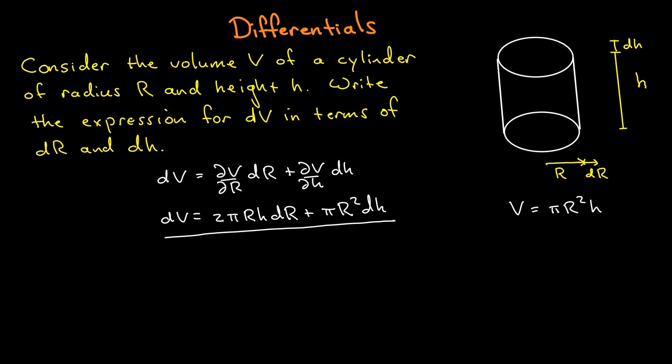I have an illustration here. If we just increase the height of the cylinder by an infinitesimal amount dh, then we add a little bit of volume: the base area pi R squared times the increment in height dh.